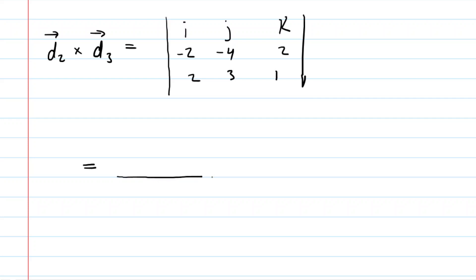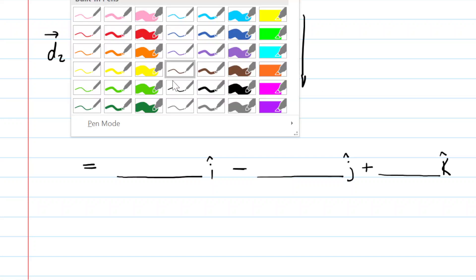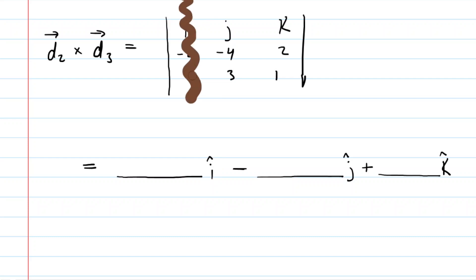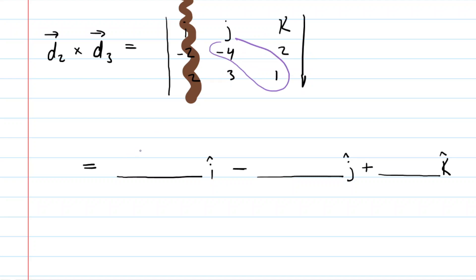In the template, the first slot will be the i hat direction or x component, the second position has a minus sign for the j hat direction, and then a plus sign before the k hat direction. For the i hat component, I cover up that first column, which leaves a two-by-two matrix. Cross multiplying: negative four times one gives negative four, and three times two gives six. Subtracting those gives negative 10 i hat.